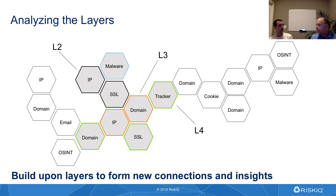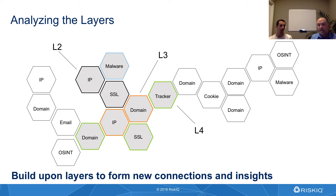It might have been hosted on an IP address somewhere that's different than the command and control IP address that we originally discovered in the malware. And then at layer four, that domain we got from the SSL certificate may in fact be hosting a web page. That web page might include an analytical tracker like Google Analytics that gives us more connections, or it might have an older SSL certificate associated with it, or that IP address hosting that SSL certificate might have another domain that we did not see.